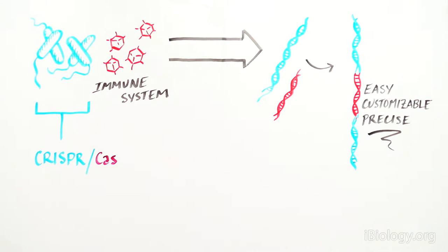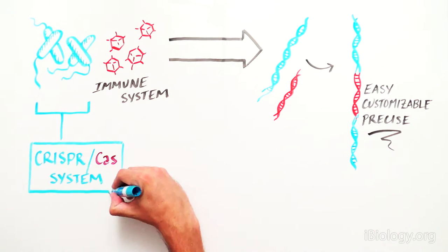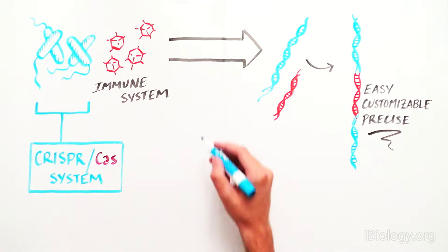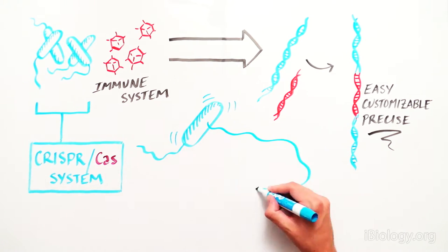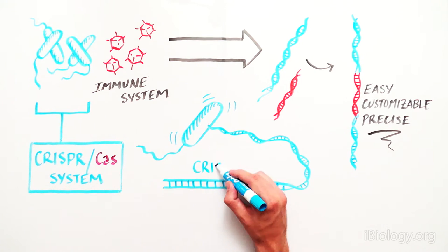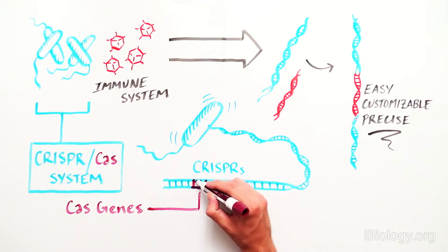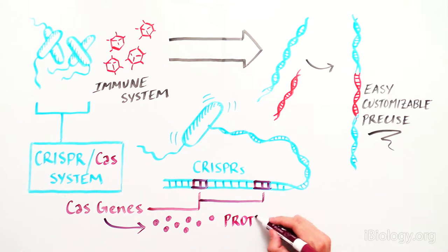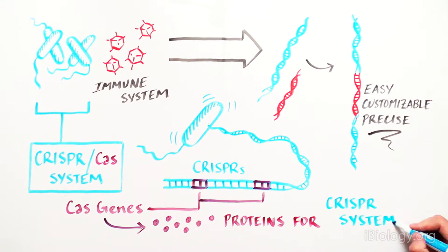Bacteria evolved ingenious ways of protecting themselves against pathogens, such as viruses, by using a system called CRISPR-Cas. CRISPRs are stretches of DNA sequence found in the bacterial genome. In close proximity to CRISPR are the Cas genes, which encode proteins necessary for the CRISPR system.